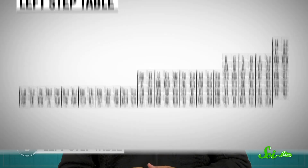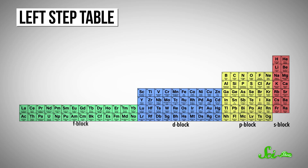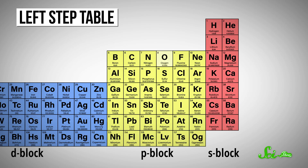You can get this information from the standard periodic table, but it's not the main organizing principle, unlike the left step table. Each block represents one of the basic shapes — the rightmost is the S shell, the next over is the P shell, and so on. So if you want to know the electron configuration of, say, oxygen, it's easy to find by reading off each subsequent row: 1s2, 2s2, 2p4. So much easier.